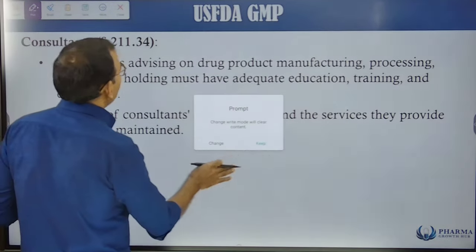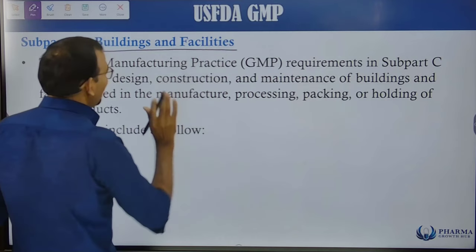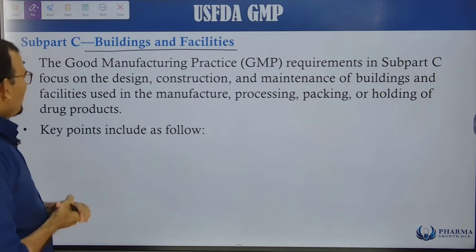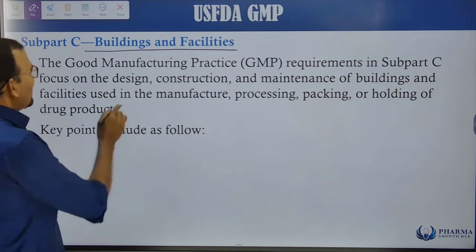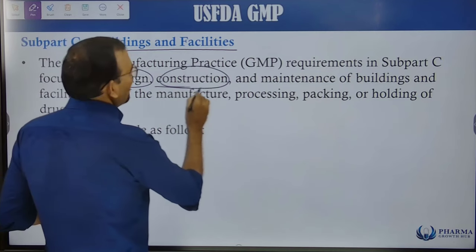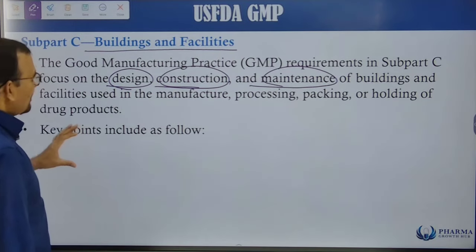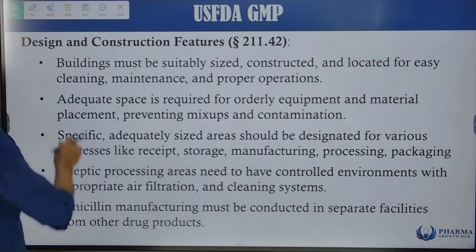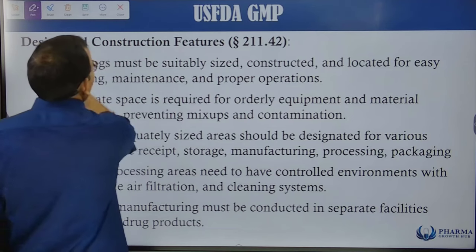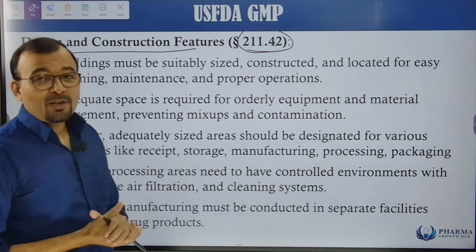Let us now move on to Subpart C, which talks about Buildings and Facilities. The GMP requirements in Subpart C focus on the design, construction, and maintenance of buildings. The section covering design and construction features is Section 211.42.